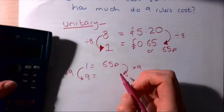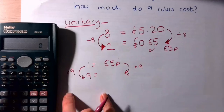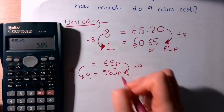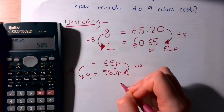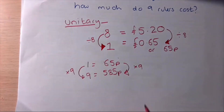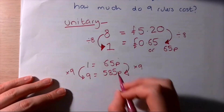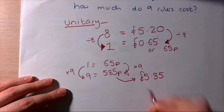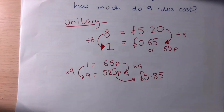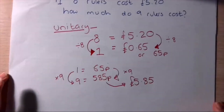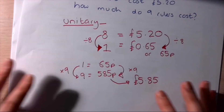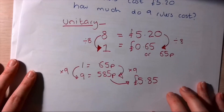Sixty-five multiplied by nine is five hundred and eighty-five. Please don't write that nine rulers cost five hundred and eighty-five pounds! Convert it — five hundred and eighty-five pence is five pounds eighty-five. Always use the most sensible unit. That's direct proportion done. Next lesson will be on inverse proportion, which works in a very similar way but is the absolute opposite — I'll explain it properly then.